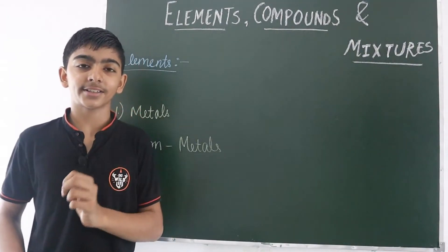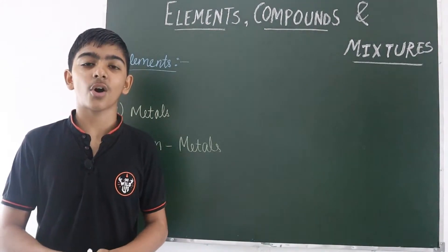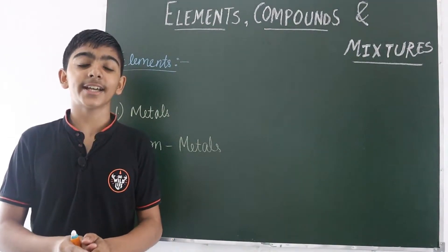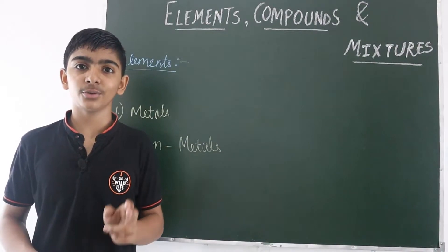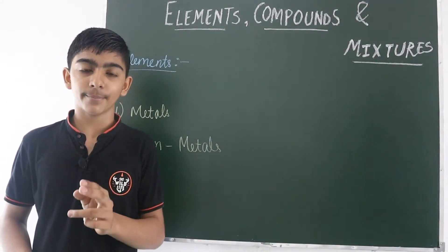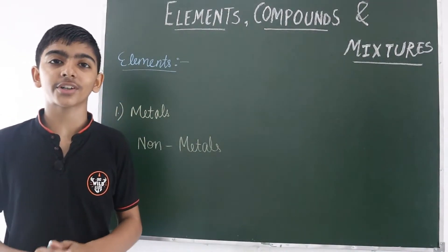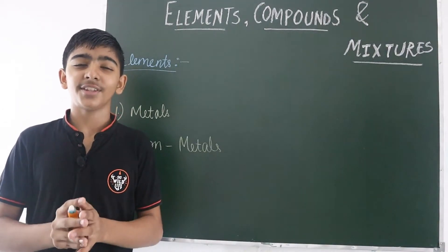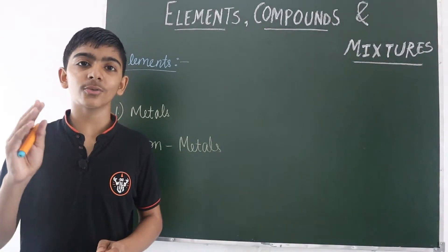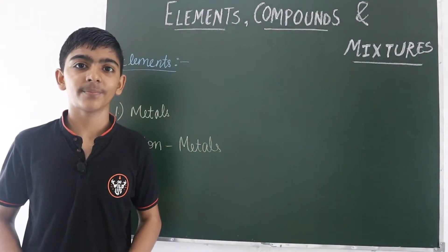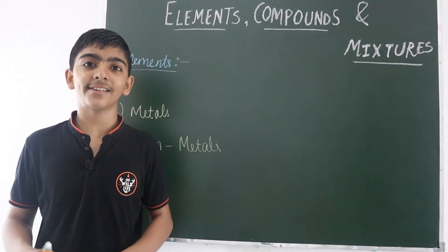Now we will discuss their characteristics. First, metals: they are good conductors of heat and electricity; they are ductile, meaning they can be converted into wires; they are malleable, meaning they can be converted into thin sheets; and they have high melting and boiling points. Non-metals are poor conductors of heat and electricity, not ductile, not malleable, and have low melting and boiling points.